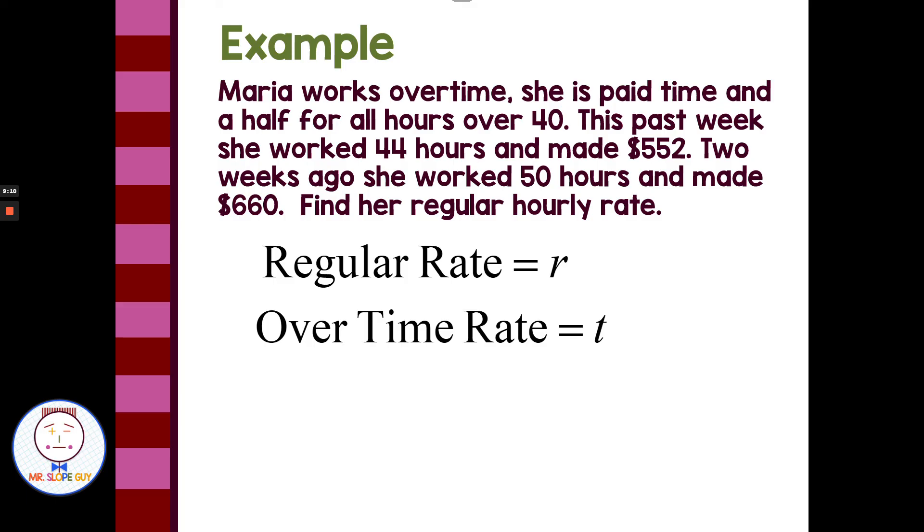So in the first week, she worked 44 hours. So at 44 hours that she worked, that was 40 hours at a regular rate and four hours of overtime rate. So that 40 at regular, 40 times R, and then four at the overtime rate gives us the equation 40R plus 4T. And she was paid $552 for that week.